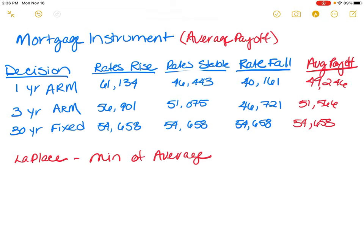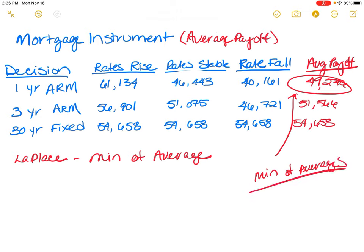So, given these three scenarios, the minimum would be the one-year ARM. So the minimum of the averages — and that is the Laplace method of decision making.